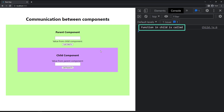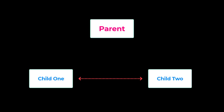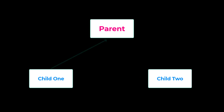I hope you understood how we can communicate from parent component to child component and vice versa. This way of communicating through props is helpful when the components are closely related. Sometimes we may need to communicate between sibling components. Using this props approach, we can communicate indirectly through the parent — for example, from child one to parent, and then from parent to child two.